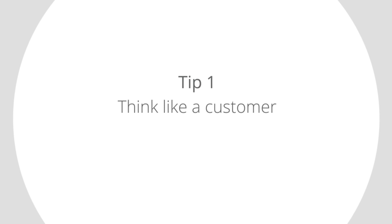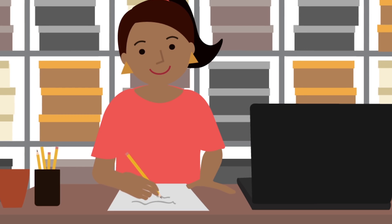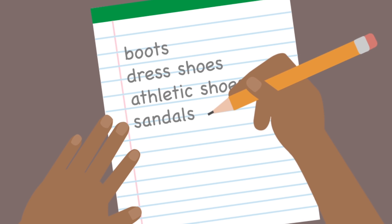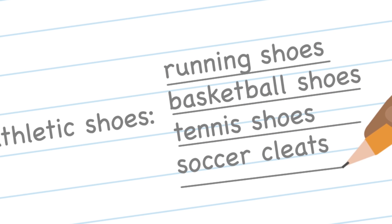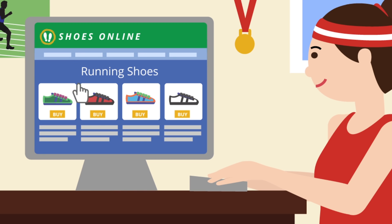Tip 1: Think like a customer. Mary tries to imagine what her customers would search for. She writes down all the categories of shoes she sells, then thinks of specific search words for each category. Doing this makes it easy for her to come up with the right keywords to attract customers looking for the shoes she actually sells.